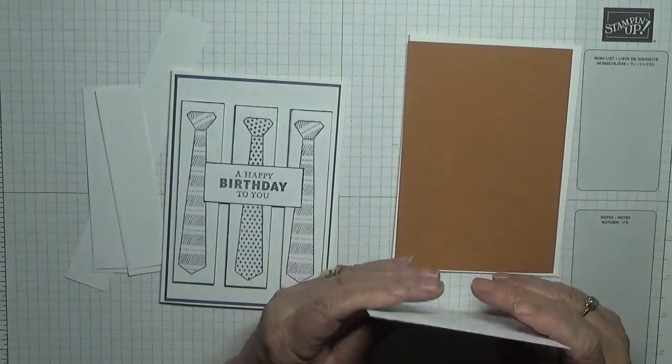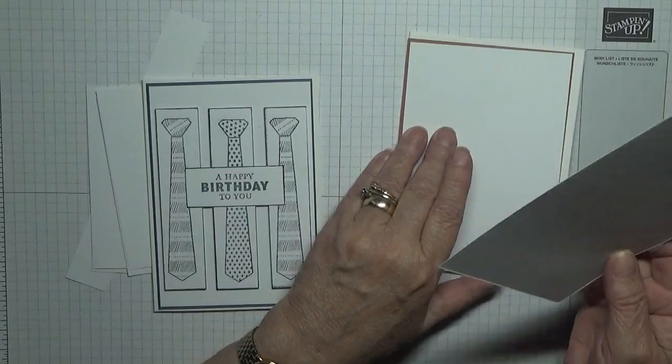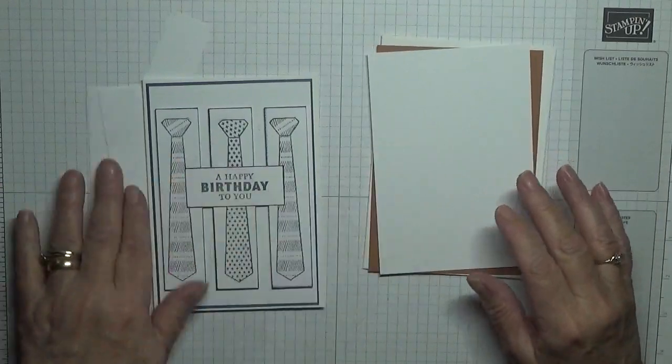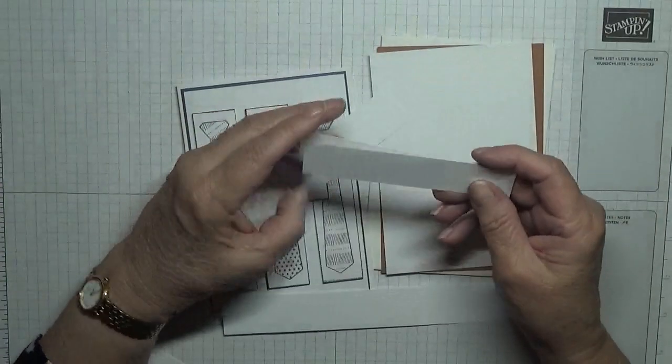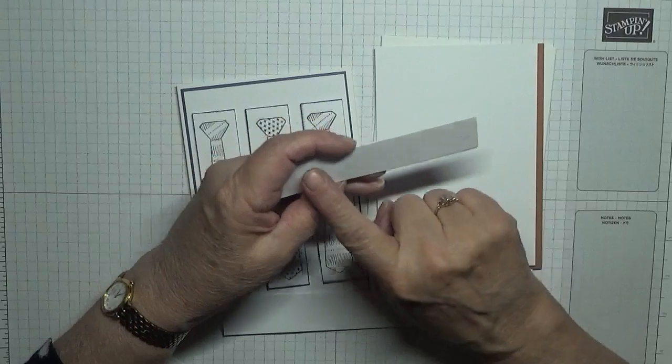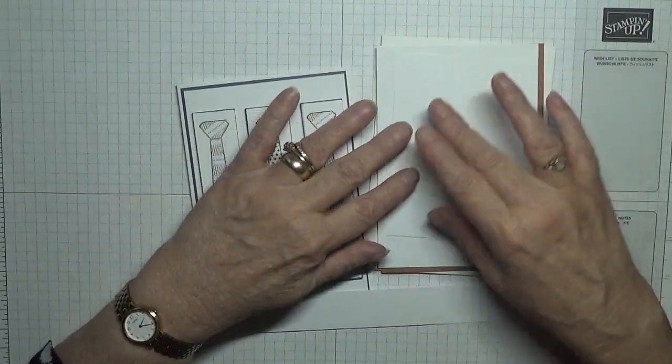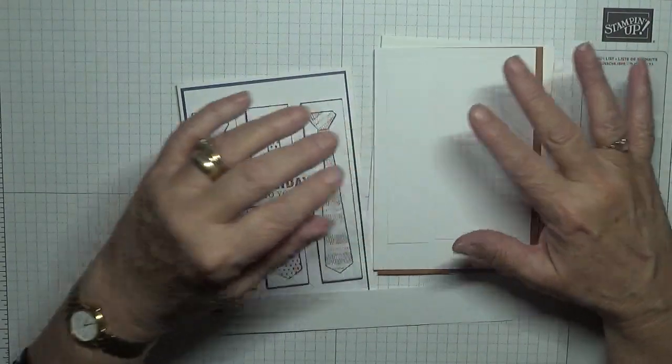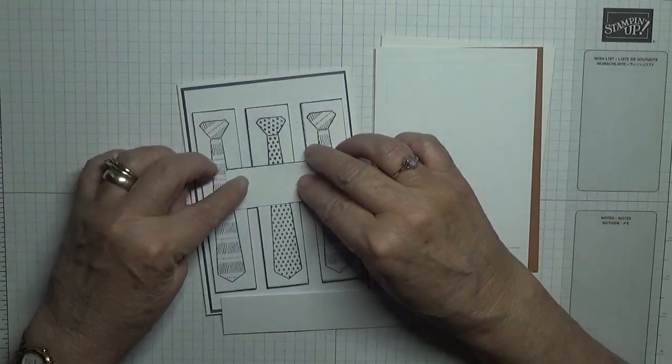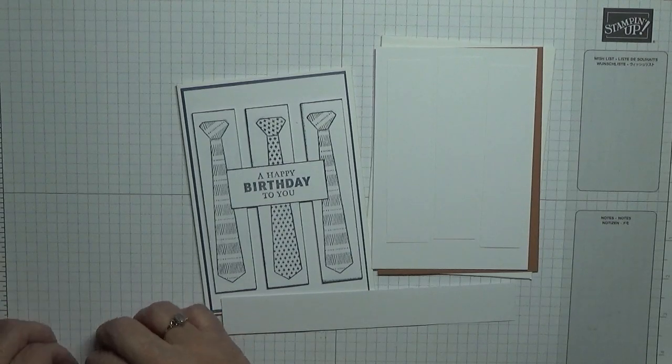Then I've got a piece of white at five and a half by three and three quarters, and a piece of white for the inside at five and five eighths by three and seven eighths. I've also got three strips at one inch by four and a half, and these are going to be sitting on here on dimensionals. And I've also got another strip at one inch by two inches.